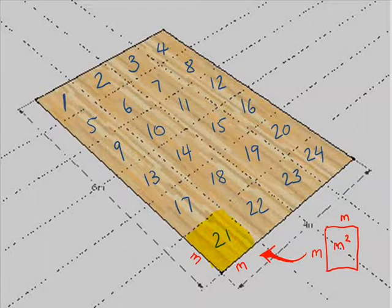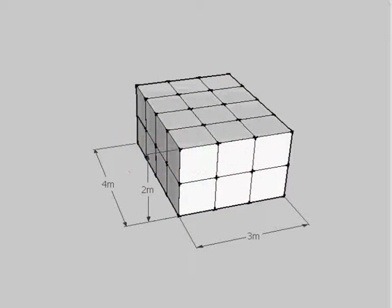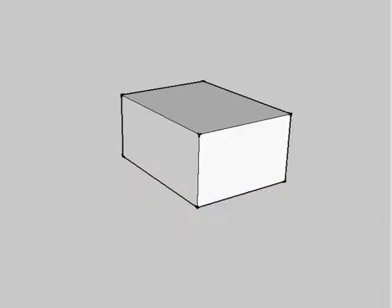The next thing we're going to look at is volume. Volume is basically where we've got our two-dimensional object and we've extended it into a third plane. So what we're looking at is three different measurements. The measurement we're going to be looking at here, the little box, is going to be 2 metres by 4 metres by 3 metres.